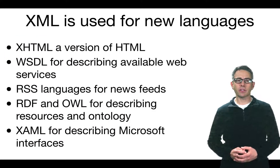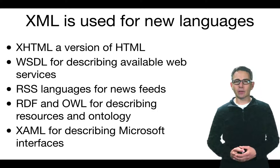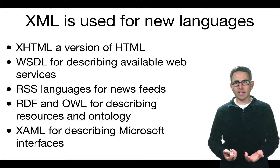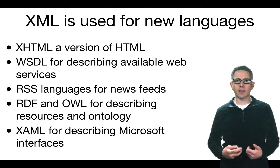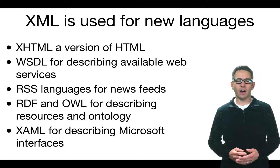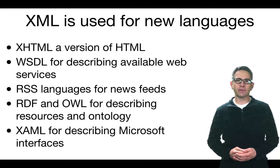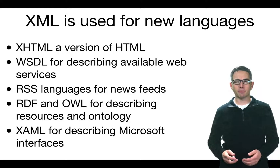XML is also used for new languages. XHTML is a version of HTML based on XML. WSDL is a language for describing web services — an XML document with predefined tags. RSS, used by newsfeed readers, is a particular set of tags expressed using XML syntax. RDF and OWL are used for describing the semantic web and ontologies, and XAML is used for describing user interfaces on the Microsoft platform — all XML documents with expected tag sets.